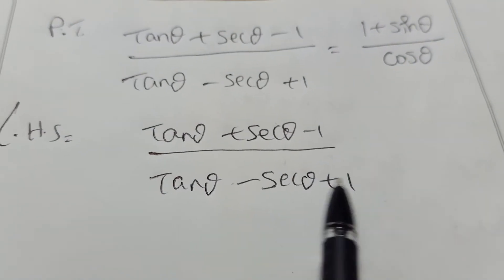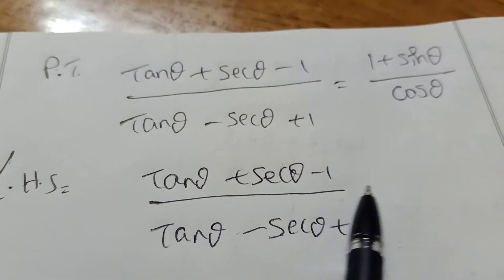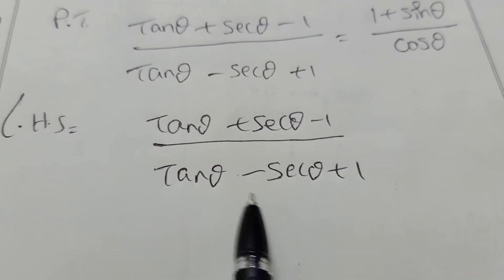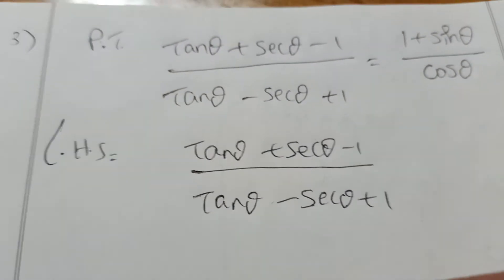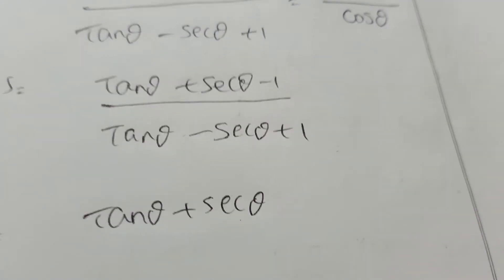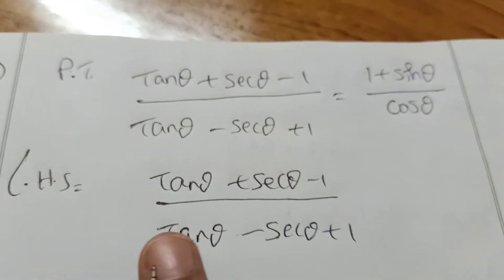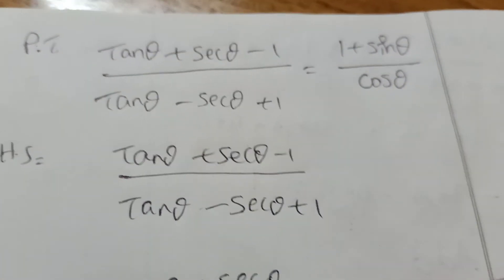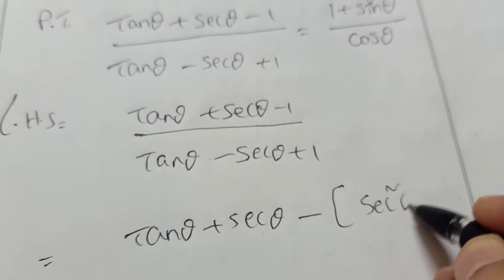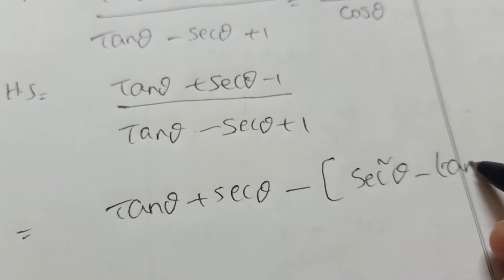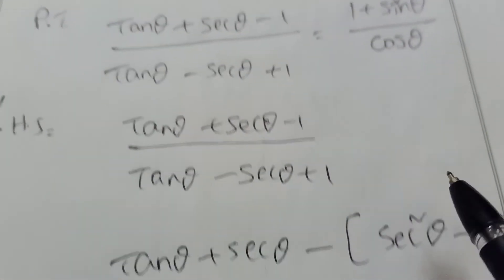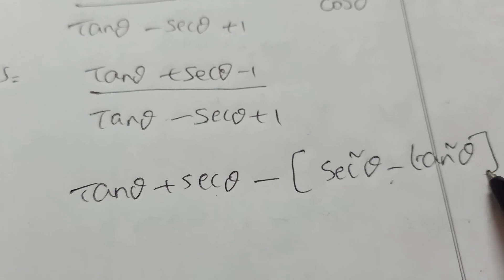Take the left hand side. We will only work on the numerator — the denominator will cancel automatically. In the numerator, write tan θ plus sec θ minus 1. Replace the 1 with the identity sec²θ minus tan²θ, since sec²θ minus tan²θ equals 1. Keep the denominator as it is: tan θ minus sec θ plus 1.